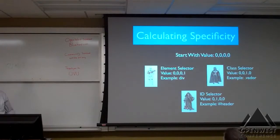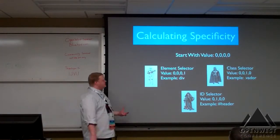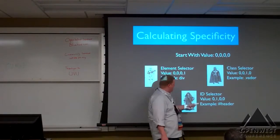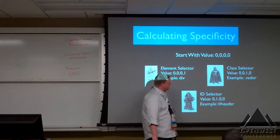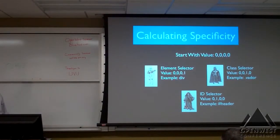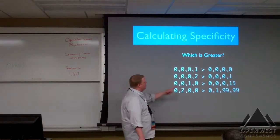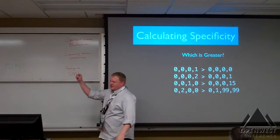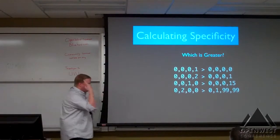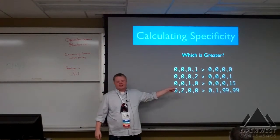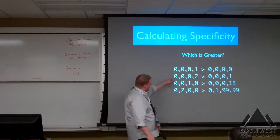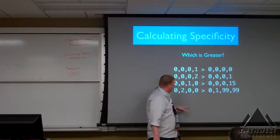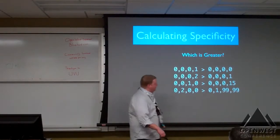There's a way to calculate specificity: every element starts with a value of 0. For every element value you add 1, every class element you add 10, and every ID you add 100. When you calculate and add up the specificity of a single rule, you can say 1 is greater than 0, 2 is greater than 1. Even if you had 15 element declarations in your rule, if another rule had one class it would override it — it follows the priority of the highest number, and if it's tied you match the next number. So 1,0 is greater than 0,15, and 200 is greater than 1,99.